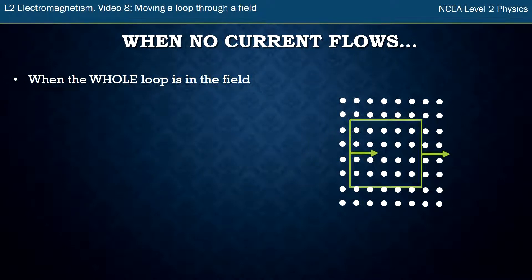If we have a situation where the whole loop is in a field and moving, we just do each section of the loop—think of it as one wire—and we just do it one at a time and see what happens.